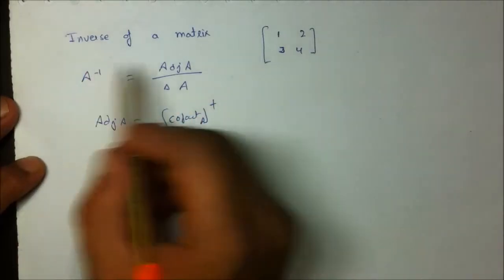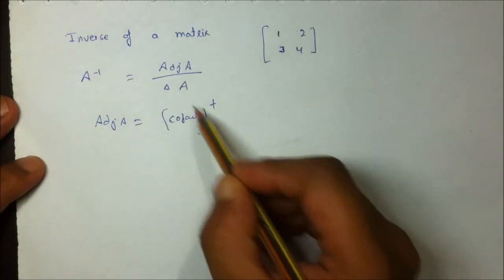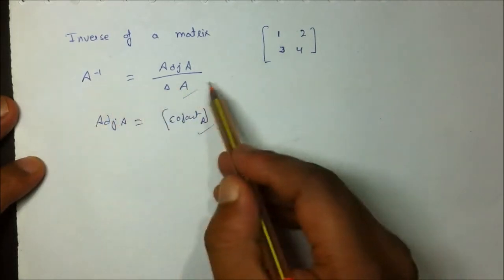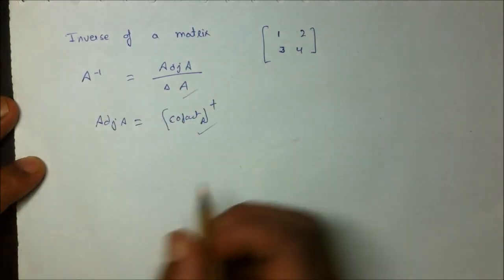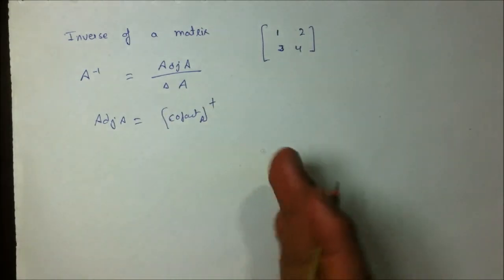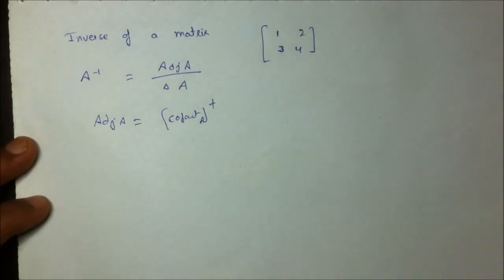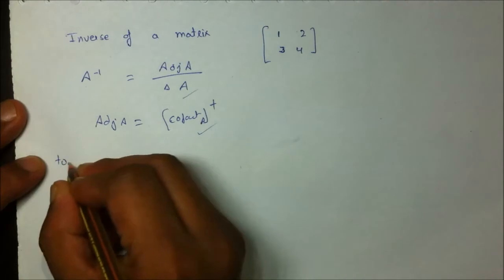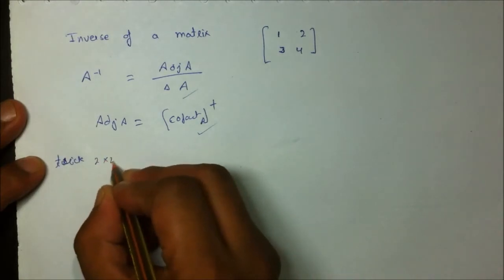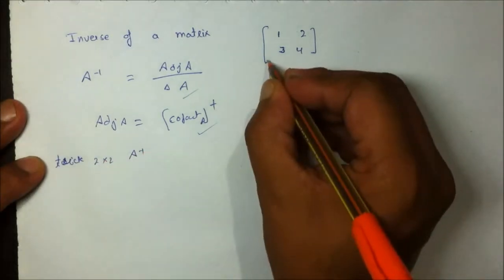To find the inverse of a matrix, we have to first find the cofactors, then the determinant, and then compute the inverse. This whole process takes a lengthy amount of time, so let me show you a trick to find the two-by-two inverse matrix quickly.